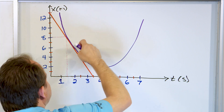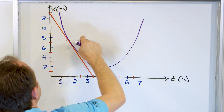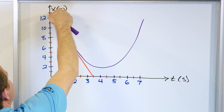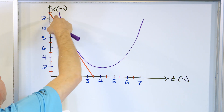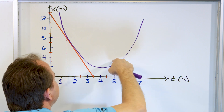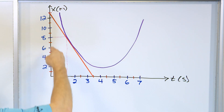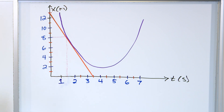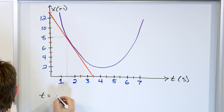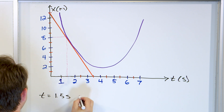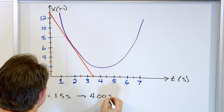We have a purple line here, which is the position as a function of time. At low values of time, we're far away from the origin, then we get closer to the origin, then farther away. This red line is the slope of the tangent line at a certain point. We want to find the average velocity in part one between t equals 1.5 seconds and t equals 4.00 seconds.